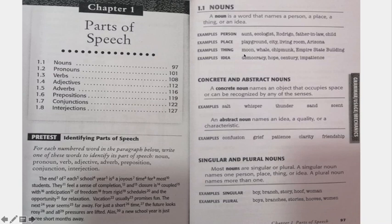A noun is a word that names a person, a place, a thing, or an idea. Examples for person would be aunt, ecologist, Rodrigo — which is a proper noun — father-in-law, which is a compound noun, and child.